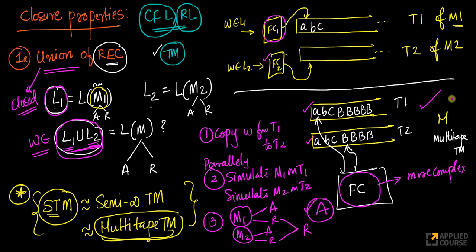The flow of logic is very important here — the way we argue about the construction of the new machine. This is how you prove closure properties of recursive languages. Since this was the first example I went into some depth; I will simplify further in the next few examples.